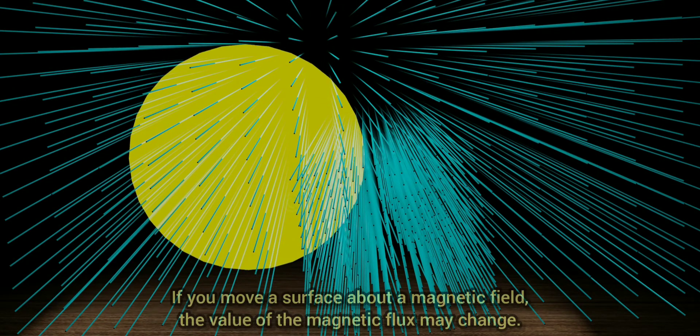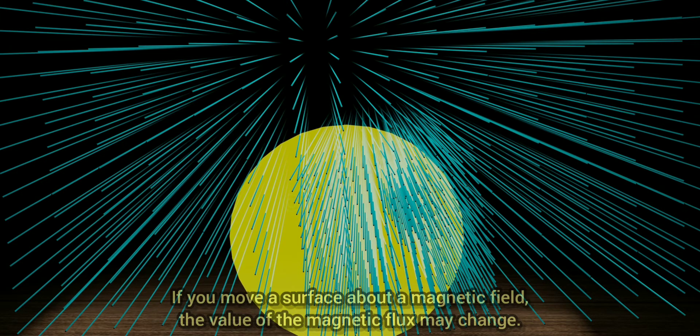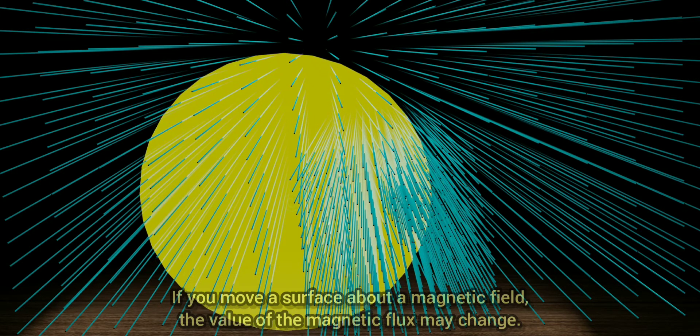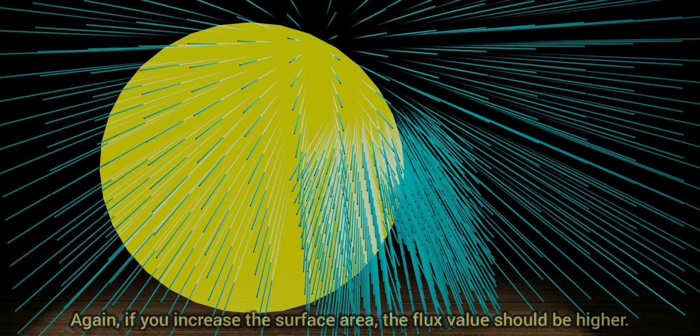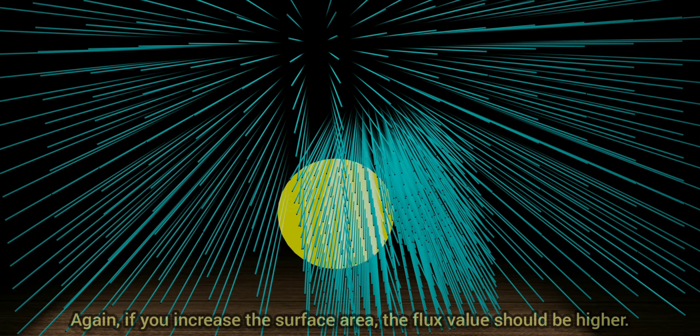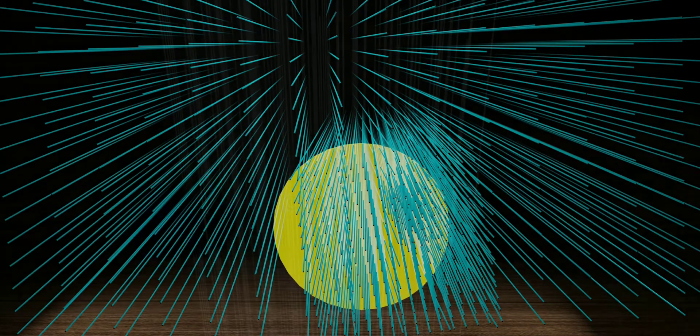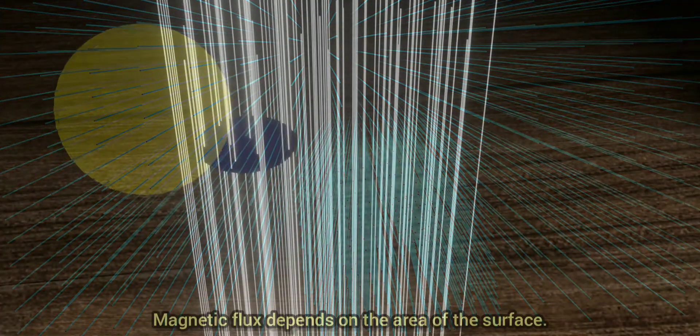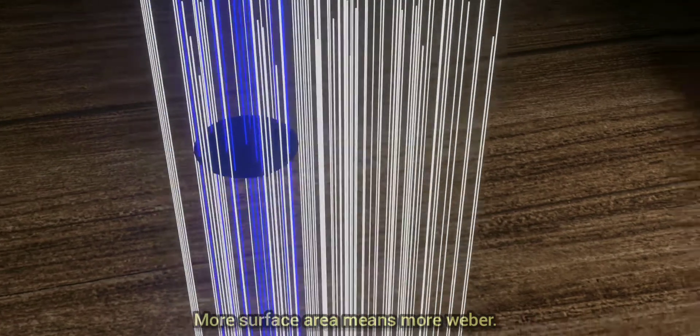If you move a surface about a magnetic field, the value of the magnetic flux may change. Again, if you increase the surface area, the flux value should be higher. Magnetic flux depends on the area of the surface. More surface area means more Weber.